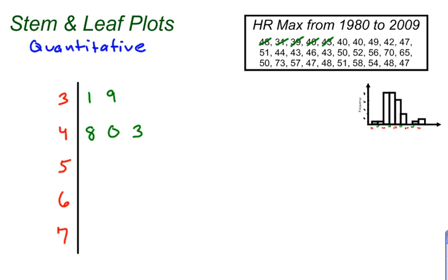This would be 43. I have two 40s, so I'm going to put two more 0s here. A 49, a 42, and a 47. So 49, 42, 47. Then 51, so put a 1 right here. 44, 43, 46. So 44, 43, 46.